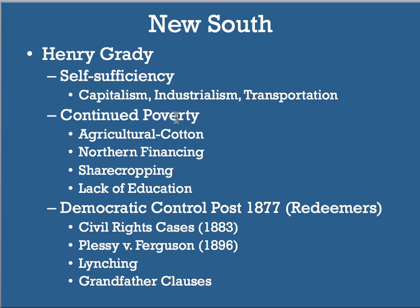After Reconstruction falls apart in 1877, Democratic Redeemers take control of the South. Through various approaches, they keep African Americans subjected to second-class citizenship. The Supreme Court agrees, ruling in both the Civil Rights Cases and Plessy v. Ferguson that segregation is acceptable and the government doesn't need to force progress for African Americans. Policies of lynching and grandfather clauses keep African Americans from exercising their right to vote, keeping the South resembling its pre-Civil War state.